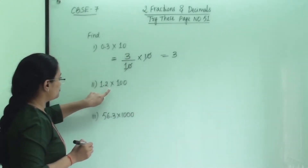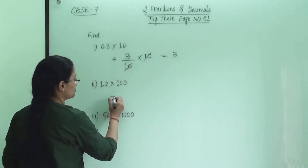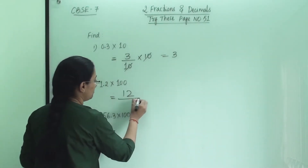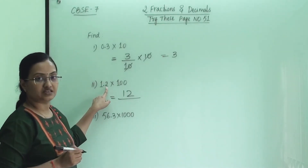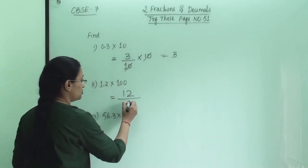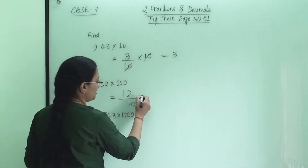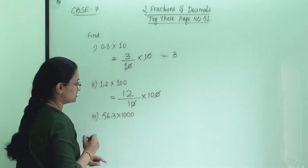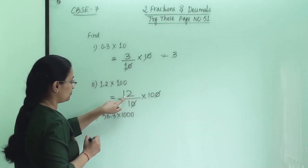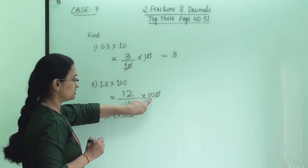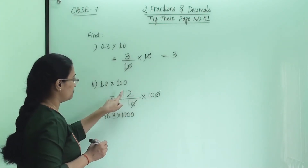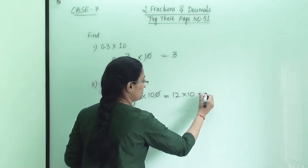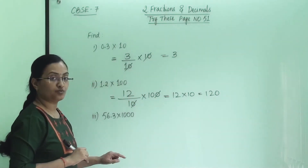The second one is 1.2 into 100. We will write 12 — first ignore the decimal point and write the number. Now we check: after the decimal point, how many numbers are there? Only one. So in the denominator 10 will come, and 100 is in multiplication. This zero and that zero will cancel, and one more 10 is left. So 12 into 10 — that 10 we multiply with 12, giving us 120.